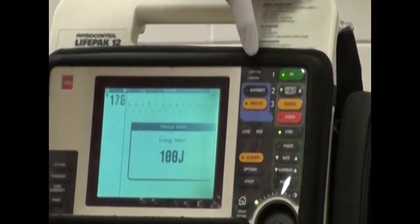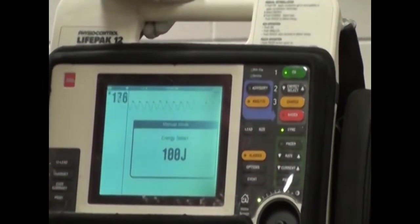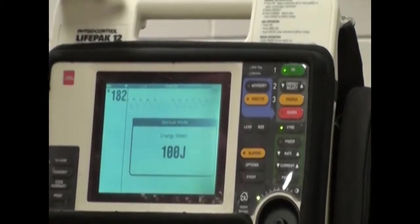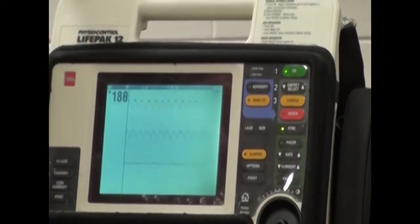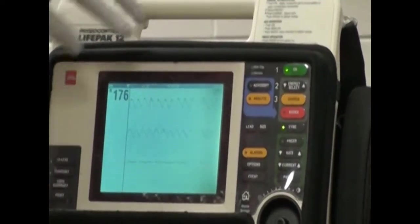She's going to select appropriate energy, and for this it's 100, and typically now, the new American Heart Association standard is starting at 100 joules for all of our synchronized cardioversions. She notes the marker on the screen, marking the R-waves.